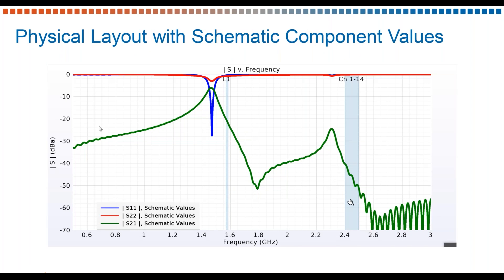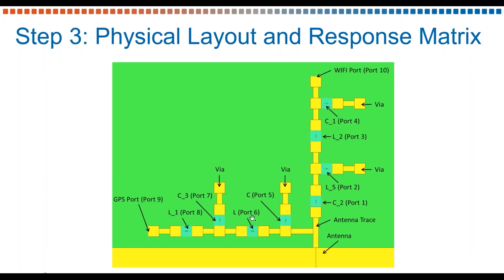This is why we'll implement our circuit element optimizer. Step three is to put the physical layout guided by the schematic editor onto the board with the antenna. We have our GPS port here at the bottom left, our Wi-Fi port up here, and it's all connected to the antenna. We've got our traces, our vias, our pads, and ports for each of our components — there should be about 10 ports here. Then we'll run our multi-port response matrix and pass those results to our circuit element optimizer.